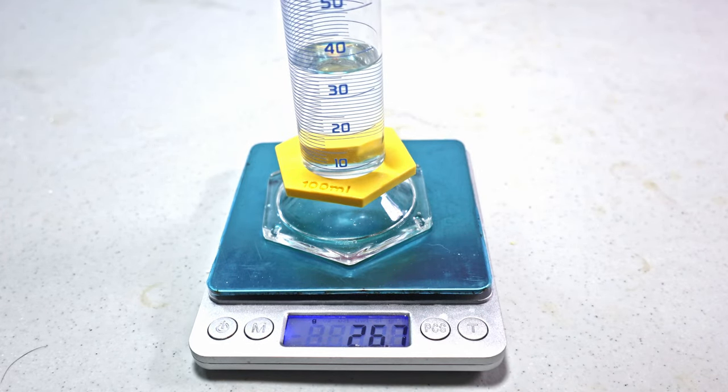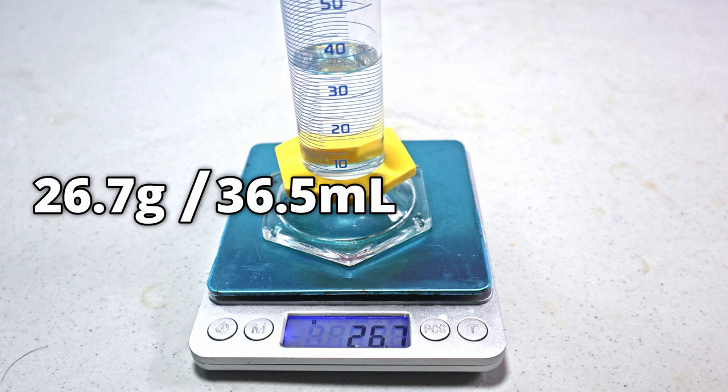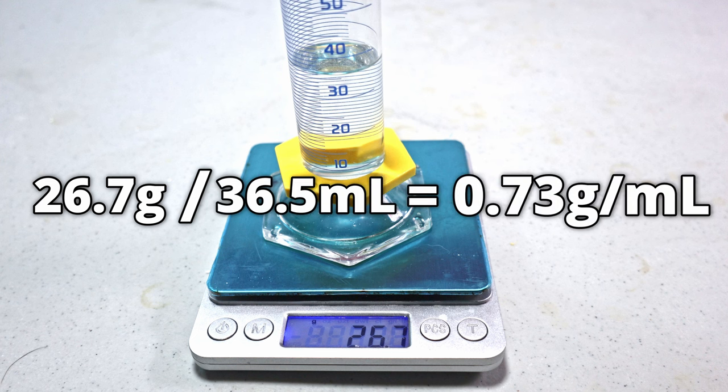The liquid stopped at the 36 and 37. So if we divide 26.7 by 36.5, we get the density of 0.73. The density of diisopropyl ether is 0.725.